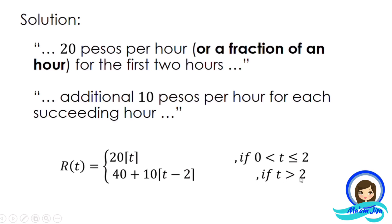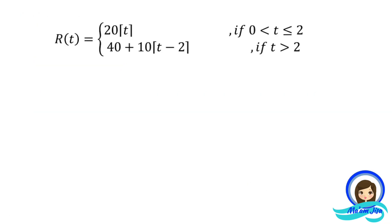The second equation uses the interval t > 2, since 'more than 2 hours' is written as t > 2. The equation is r(t) = 40 + 10⌈t − 2⌉. The 40 comes from the cost of the first two hours. The 10 comes from the given additional 10 pesos per hour. The term (t − 2) represents the time beyond the first two hours.